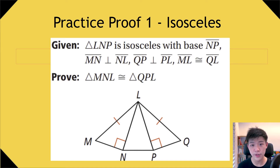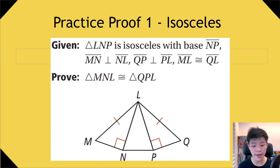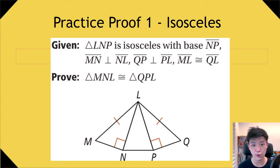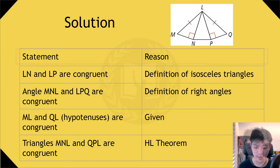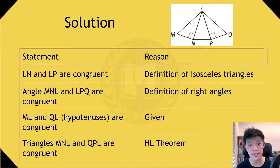Now that we've reviewed some theorems, let's do a practice proof. You are given that triangle NLP is isosceles with base NP, line MN bisects line NL, line QP bisects line PL, and line ML is congruent to line QL. Prove that triangle MNL is congruent to triangle QPL. Feel free to pause the video and work it out yourself. So remember from the last video on proofs, we need two columns — a statement and a reason. First, we can notice that LN and LP are congruent, because NLP is an isosceles triangle, and isosceles triangles must have two congruent sides.